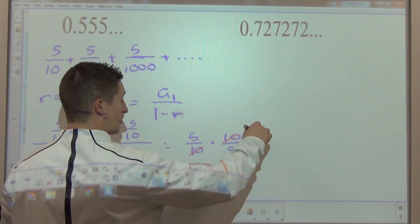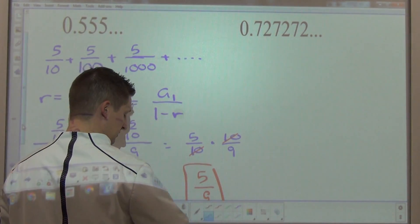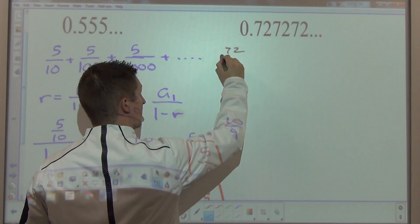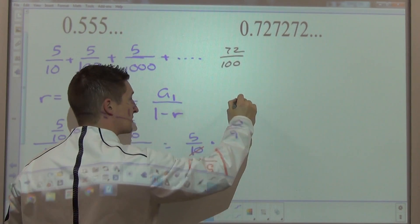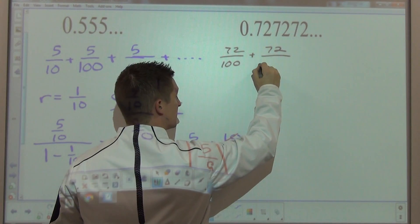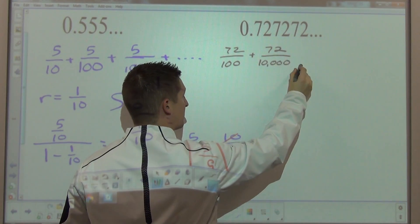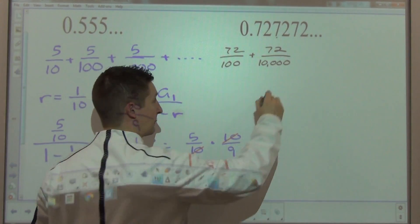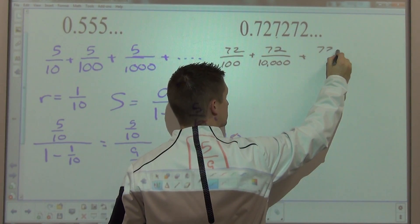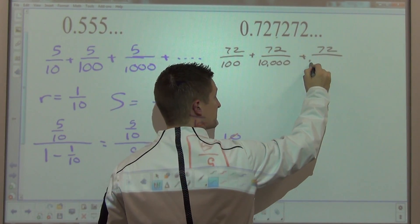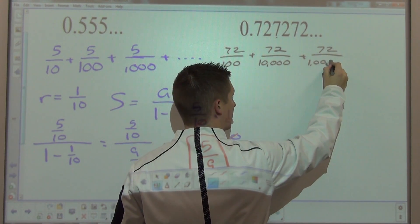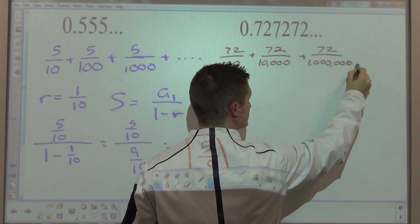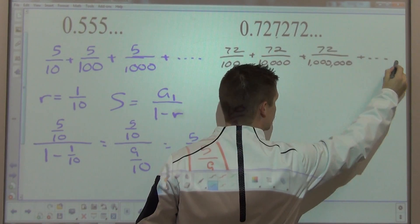For this expression, we're going to take 72 hundredths as the first term, plus 72 ten-thousandths. What happened is because I went two place values, I added two zeros to my denominator. The next one would be plus 72. We'll add two zeros to this. Now we're looking at one millionth, plus dot dot dot. You get the idea.